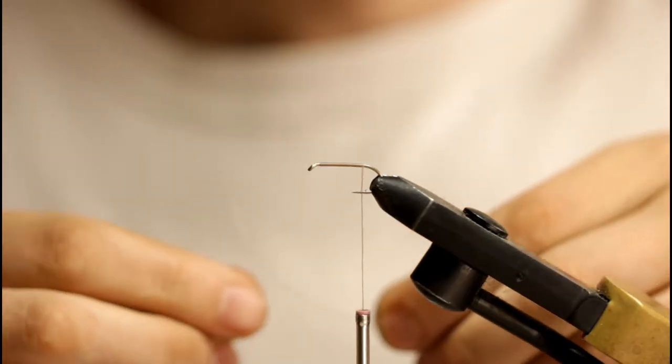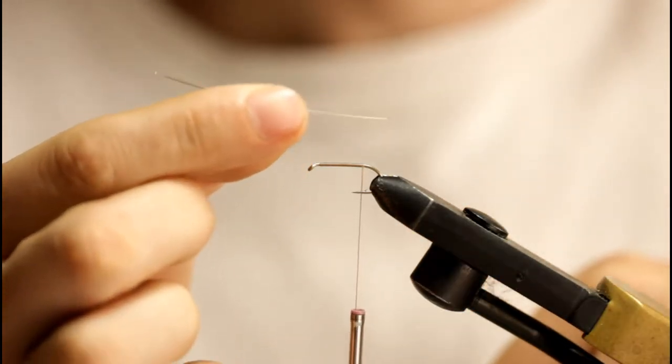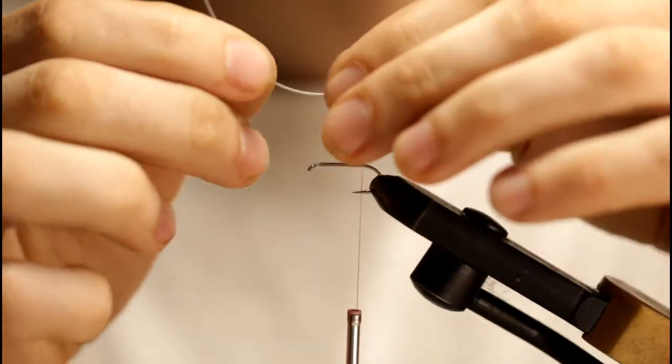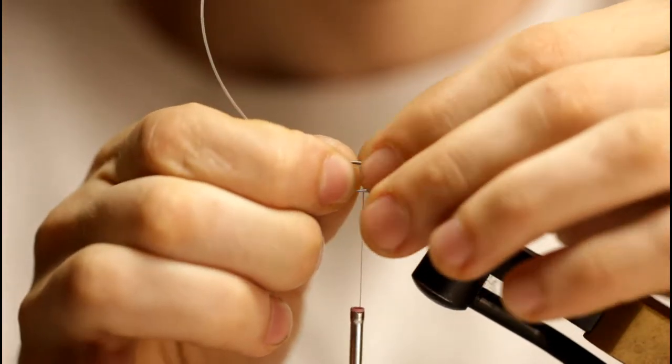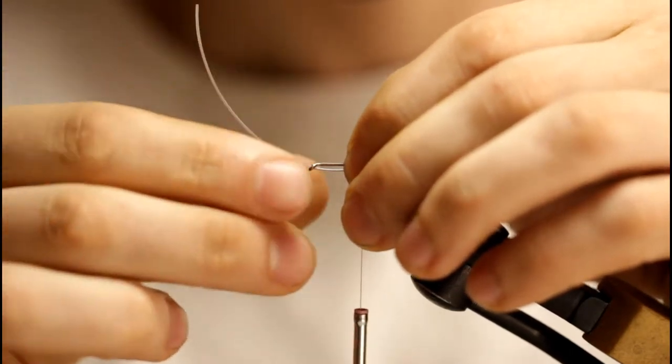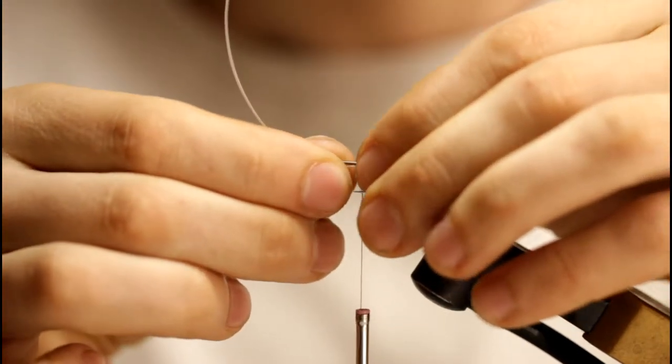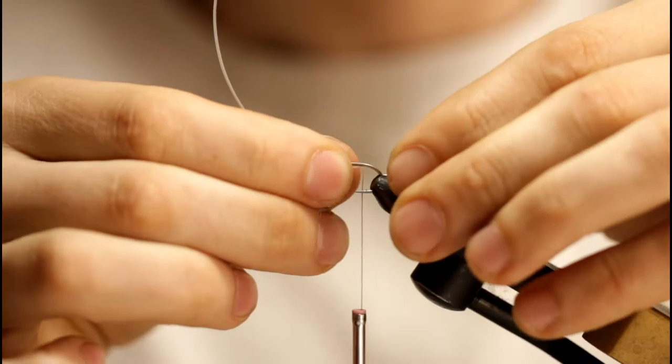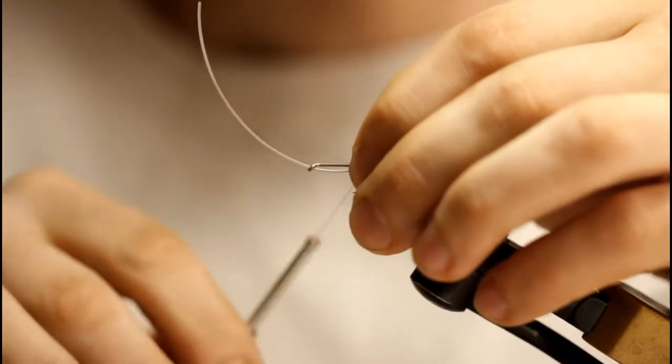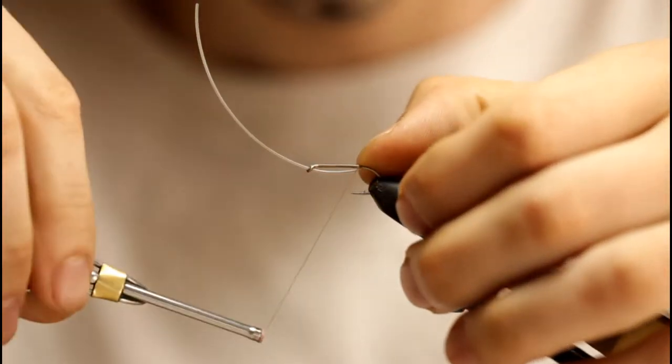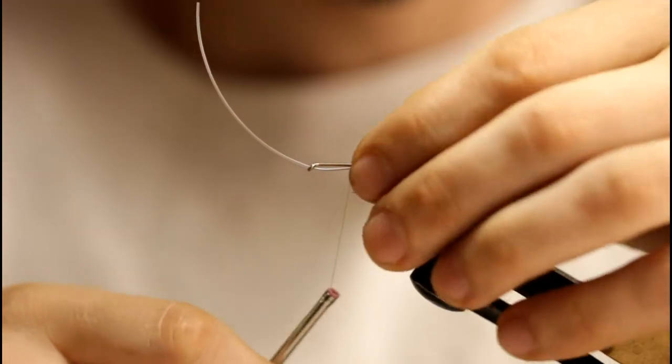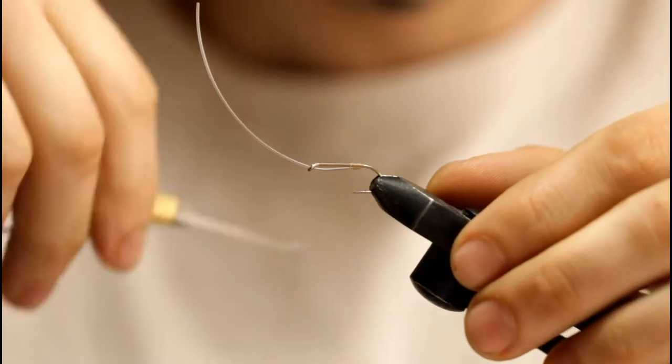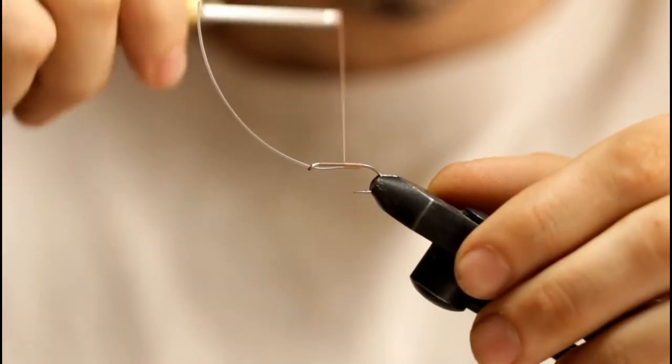I'm just going to grab a piece of pre-cut monofilament here. It's a 30 pound test monofilament. Slide it through the hook eye and tie it in where the thread stops. I like to cut mine to be about three quarters of an inch long. Now I'm just advancing the thread towards the hook eye. These are fairly loose turns here just trying to get the orientation of the monofilament straight.